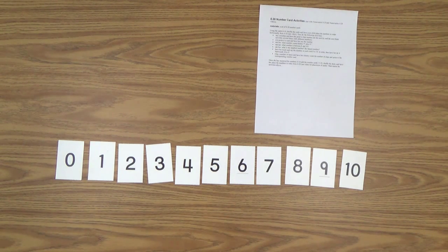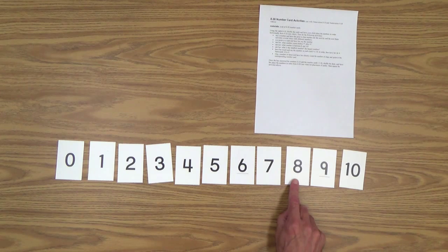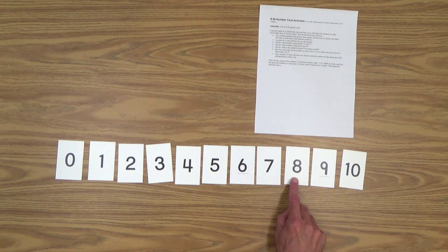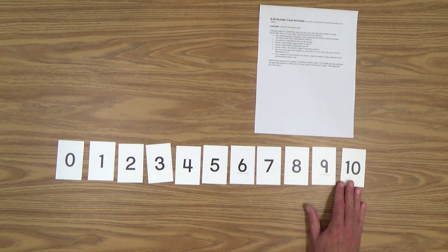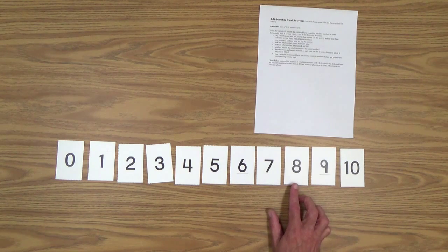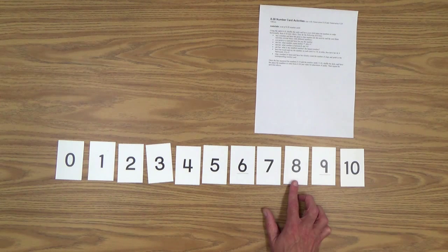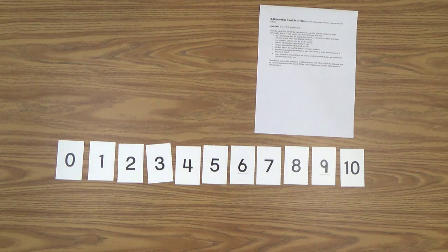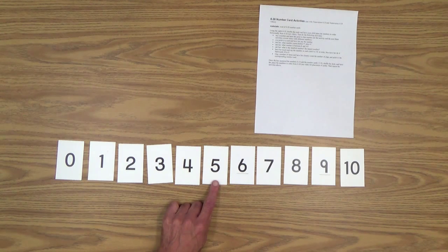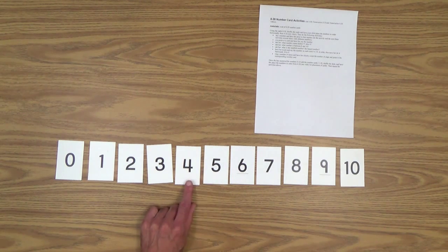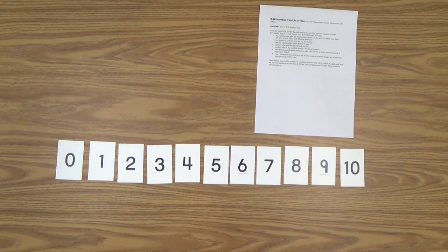So you could say point to the number eight and hopefully she will point to it and have her say the number as she touches it, too. That's a great way to make the connection between verbally saying the number, the name of the number and what it looks like. So you can do that with several numbers. You could flip it around a little bit by you point to a number card and have her say the number. So you could point here and she would say three, point here and she would say five. So that's obviously a slightly different version of what you just did.